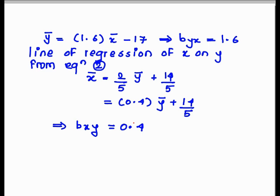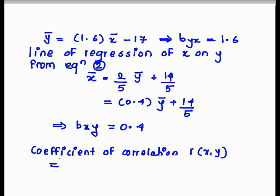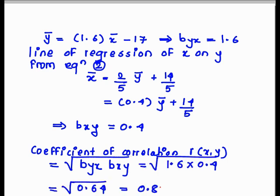As we know that coefficient of correlation r(x,y) equals the square root of b_yx times b_xy, we substitute these two values. After simplification, we get the coefficient of correlation is 0.8.